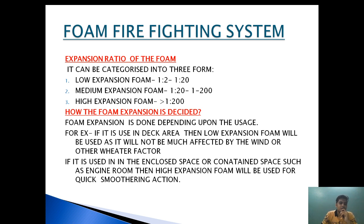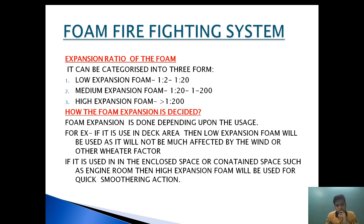Foam can be categorized into three main forms depending on the expansion ratio. First is low expansion foam, second is medium expansion foam, and third is high expansion foam. If the expansion ratio is 1:12 to 1:20, it is categorized as low expansion foam. If the expansion is from 1:20 to 1:200, it is called medium expansion. Greater than 1:200 is categorized as high expansion, with the limit being 1:2000.